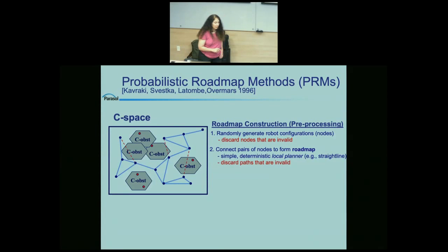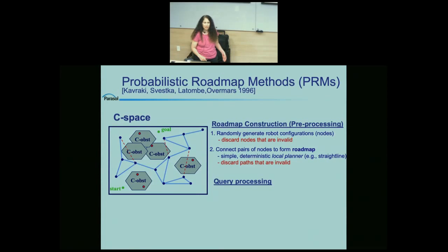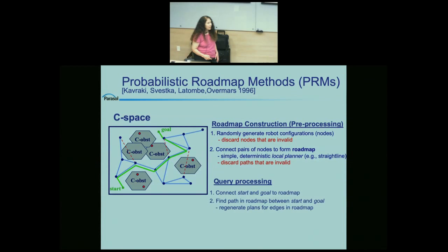Doing that for all points independently results in a roadmap that should, if it's a good one, contain representative feasible trajectories in the space. To answer a query, I connect my start and goal configurations to the roadmap using the same strategy, then use a graph search technique to pull out the path connecting those two points. Note that this path is not necessarily the shortest or best path — it's just some path connecting the start and goal configuration, which is what we were looking for.